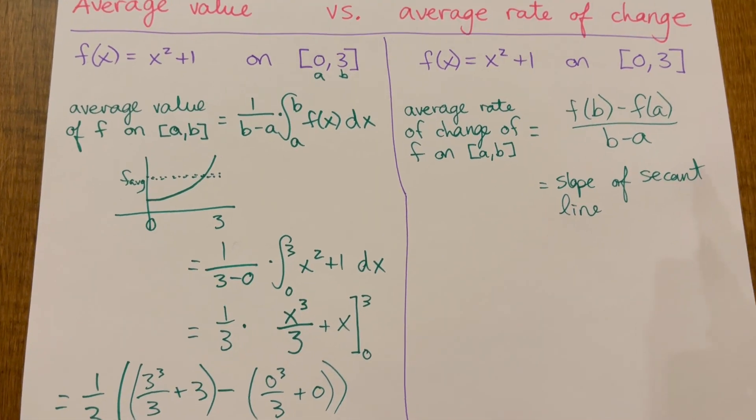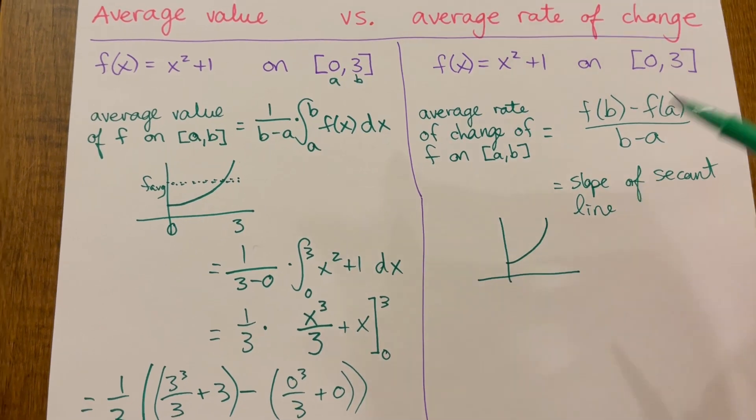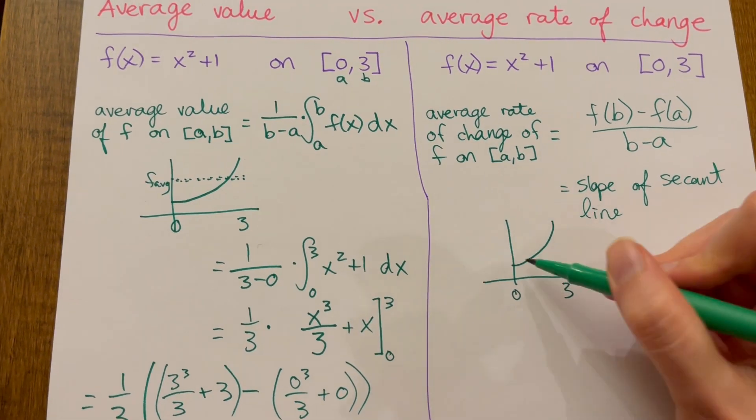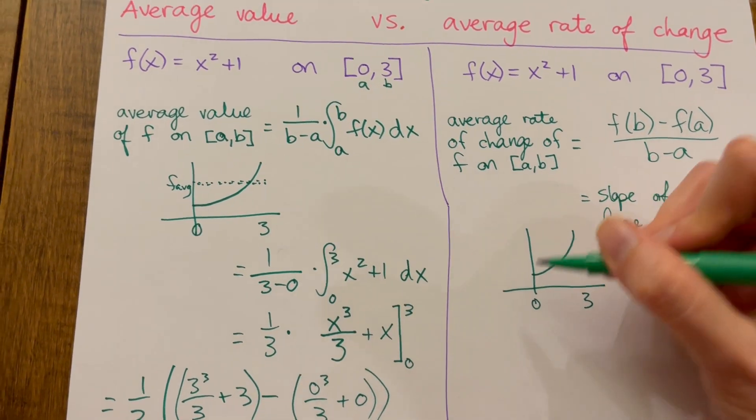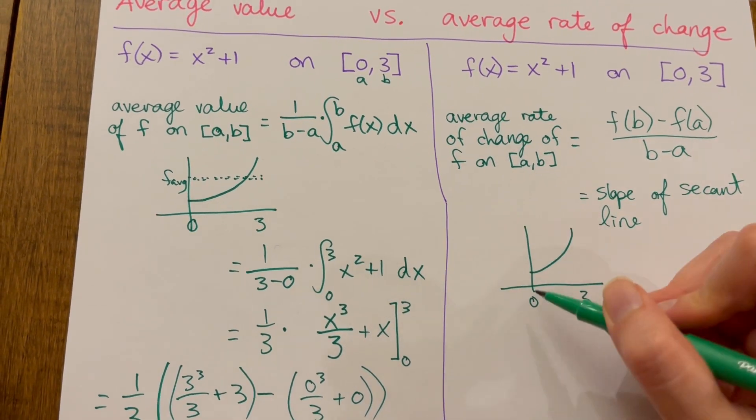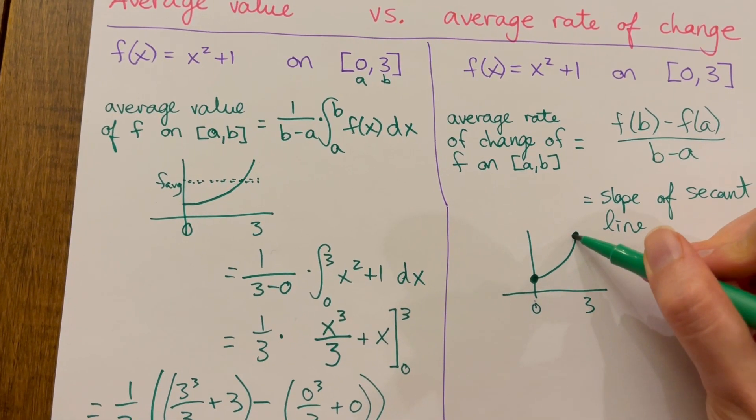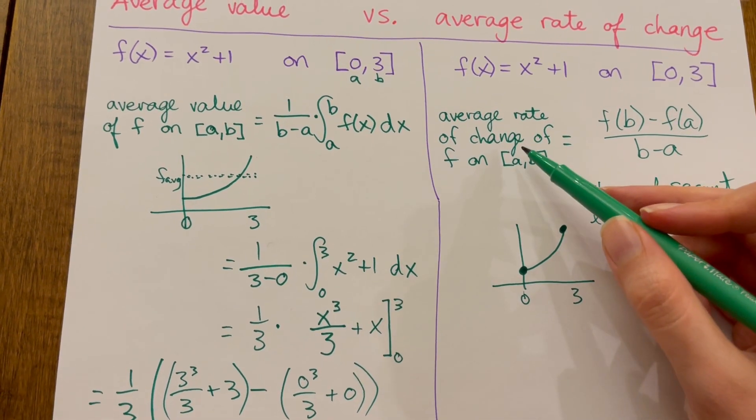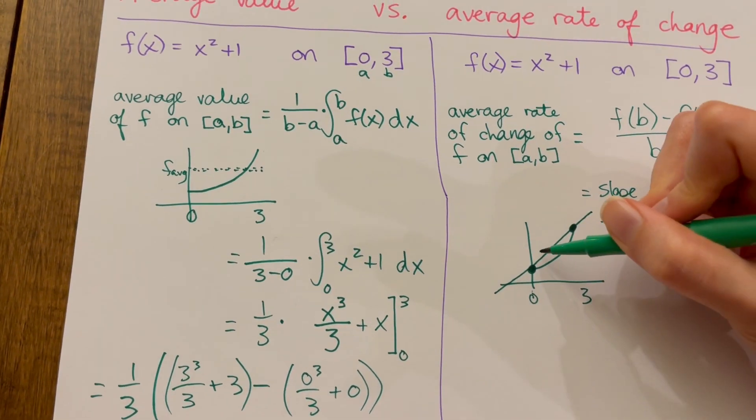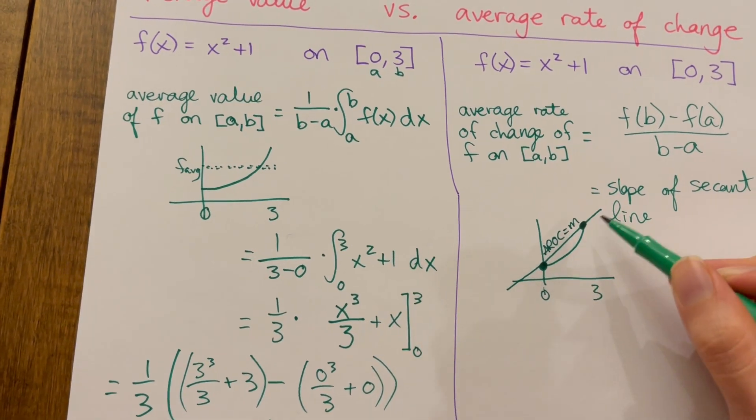The secant line connects two points on your graph. In this particular problem, here we have the shifted up parabola from 0 to 3. This is our x squared plus 1. We're finding the slope of the secant line from this point to this point. At x equals 0, we're going to the height of the curve. And at x equals 3, we're going to the height of the curve. Average rate of change is going to be the slope of this secant line here.